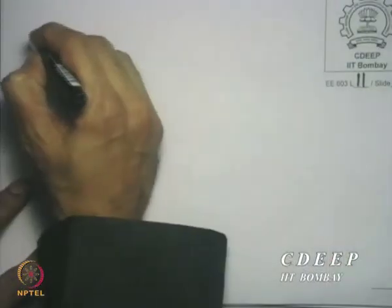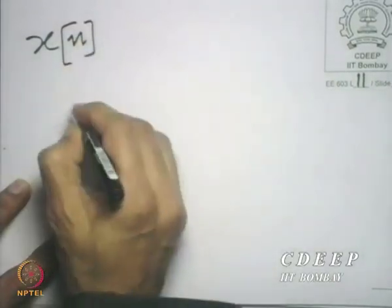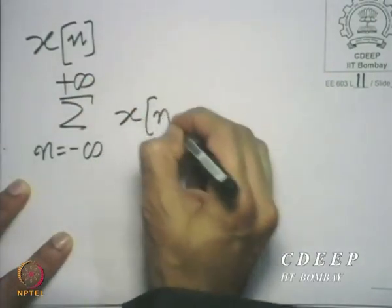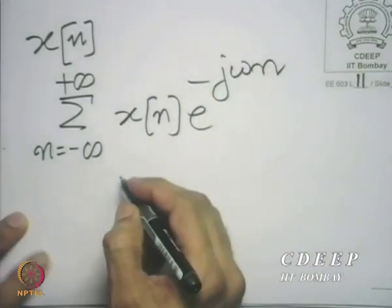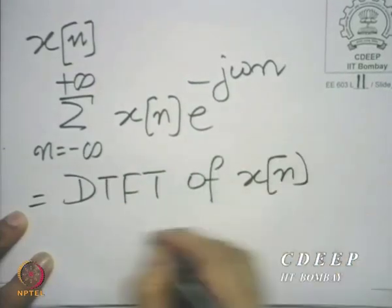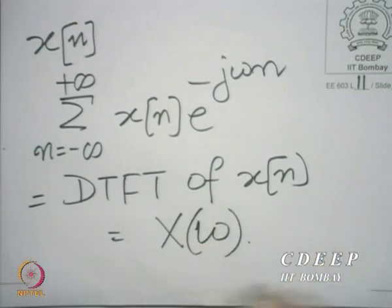We had seen that if you have an arbitrary sequence x[n] and if the summation n going from minus to plus infinity of x[n] e raised to the power minus j omega n converges, we call it the discrete time Fourier transform of the sequence x[n], denoted by capital X as a function of omega. Here the dependence is on the variable omega, and omega is a continuous variable. It can take on values continuously all over the real axis; however, there is periodicity in X(omega).